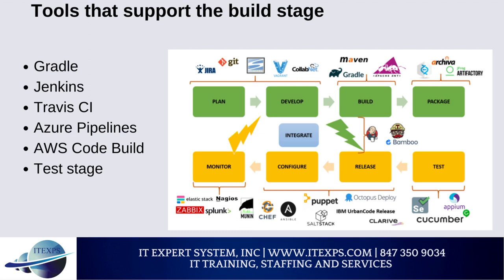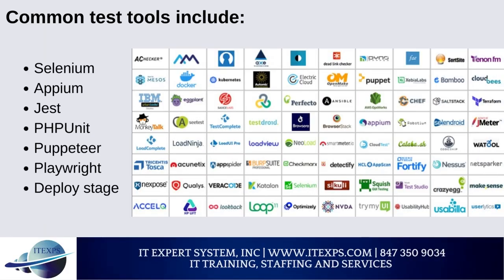The Test stage incorporates all automated testing to validate the behavior of the software. The goal is to prevent software bugs from reaching end users. Multiple types of testing — from integration testing to functional testing — can be incorporated, and this stage will also expose any errors with the product. Common test tools include Selenium, Appium, Jest, FPUnit, Puppeteer, and Playwright.